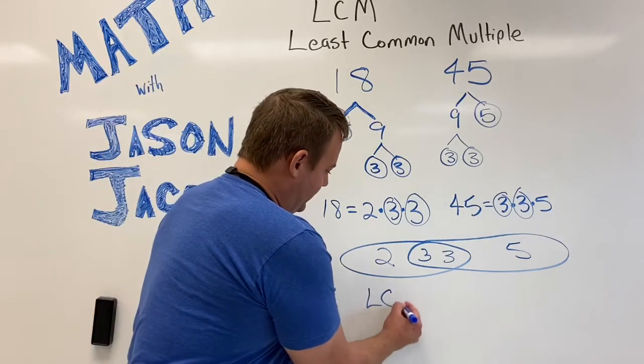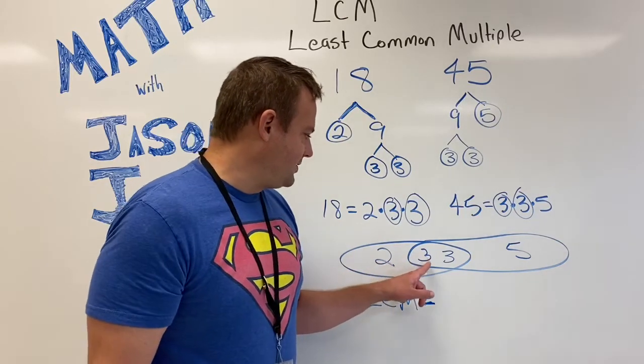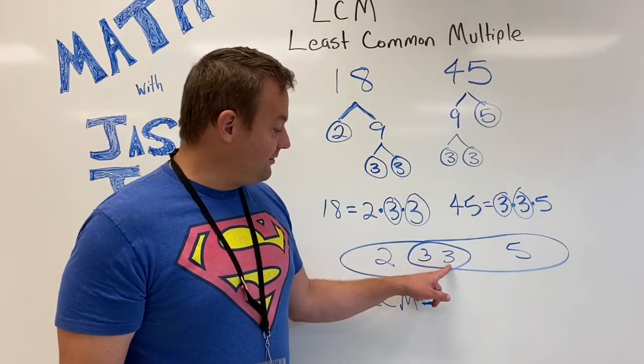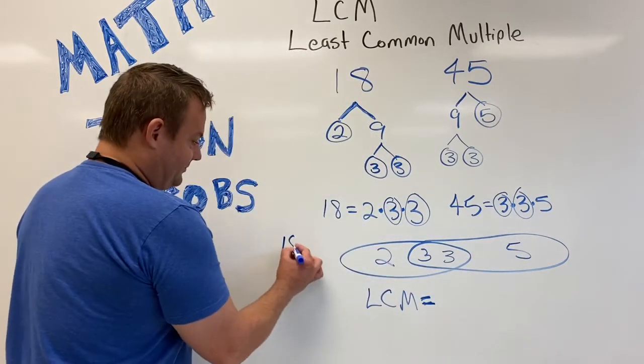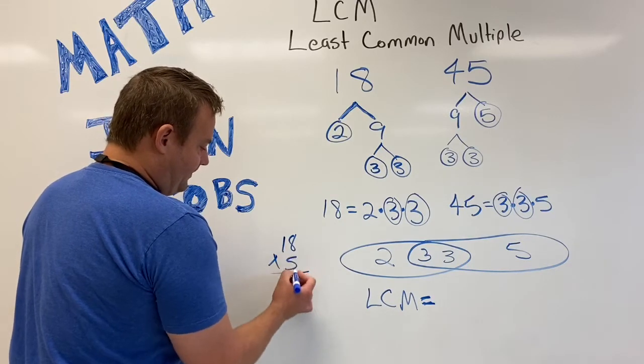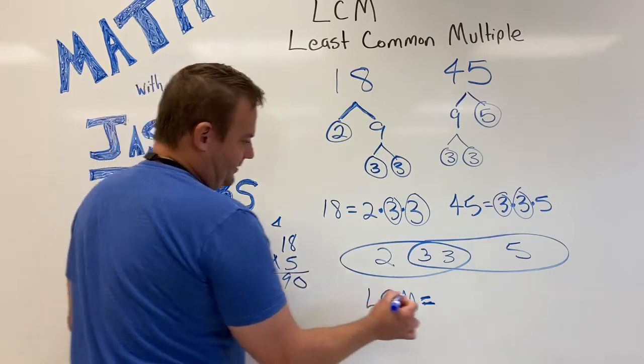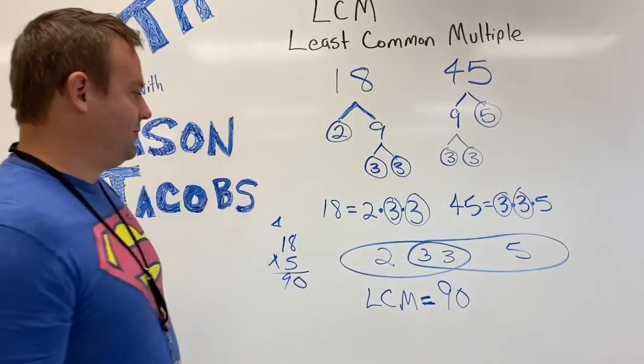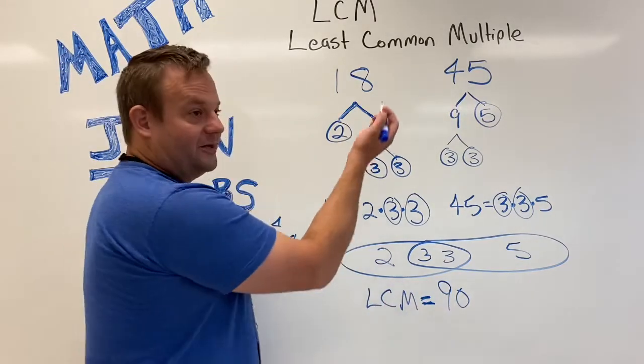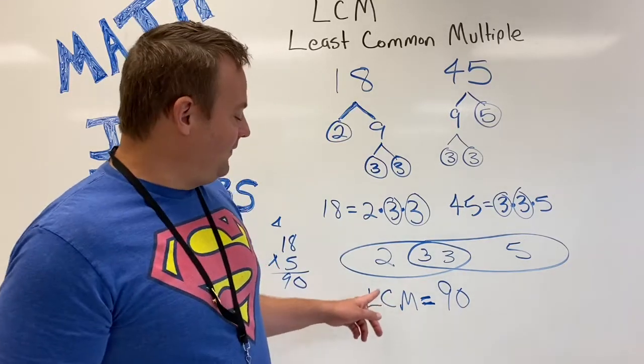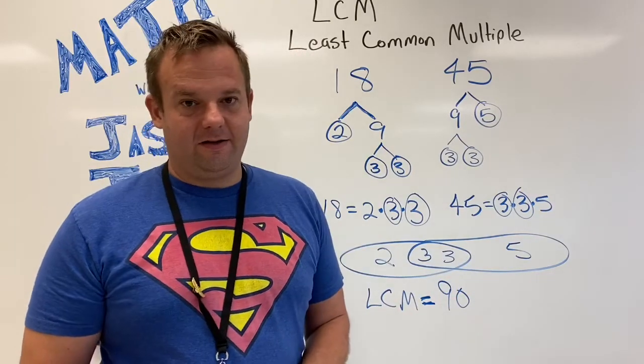And then the least common multiple, the least common multiple, is 2 times 3, which is 6, times 3, which is 18, times 5, which is... I'll have to do it out: 5 times 8 is 40, so 90. So the least common multiple is 90. I guess it wouldn't have been so bad listing it. So again, how you found the least common multiple is you go 2 times 3 times 3 times 5.